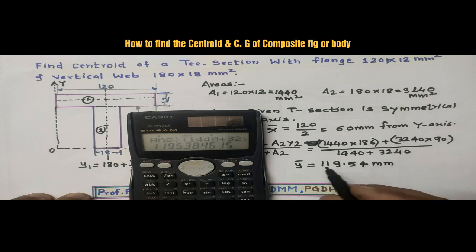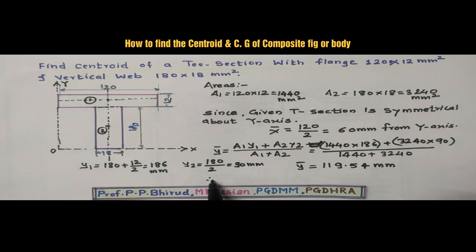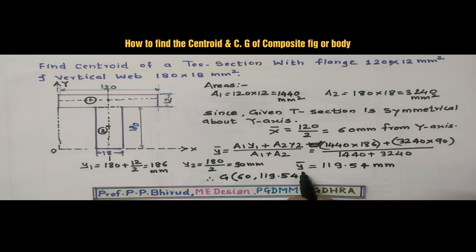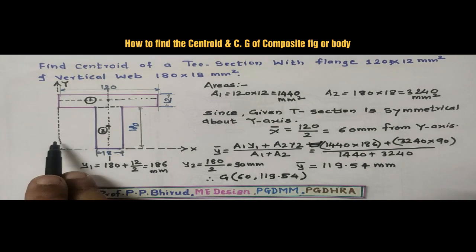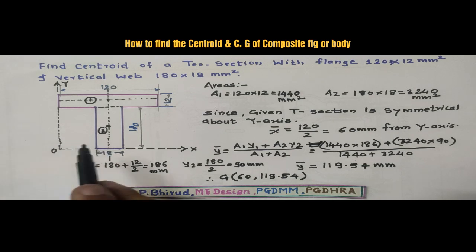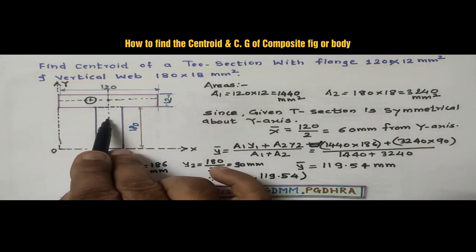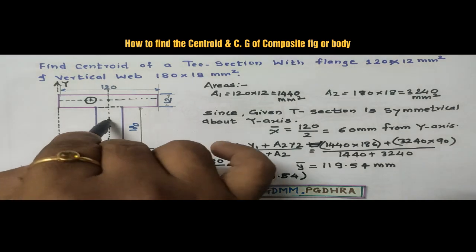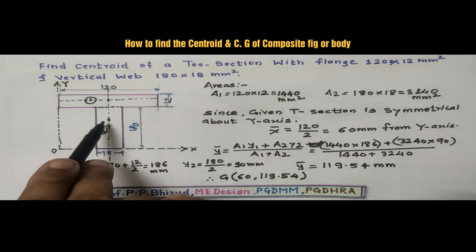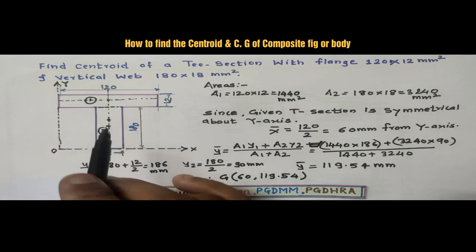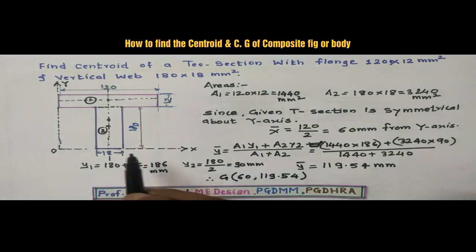So, y-bar is 119.54 mm. Therefore, the centroid is located at x = 60 mm and y = 119.54 mm. So at a distance of 60 mm along x and 119.54 mm along y, we get the centroid of the T-section here — this point is G. You can draw the figure again and show the centroid on the figure.